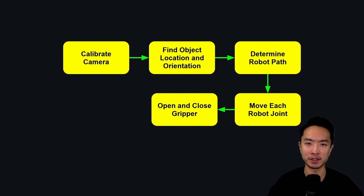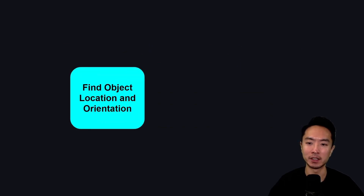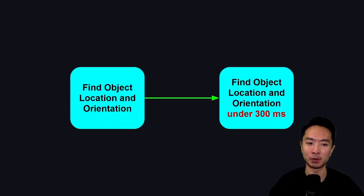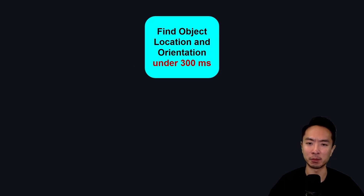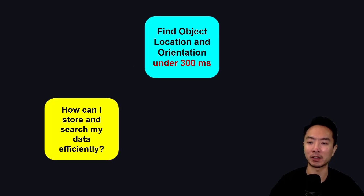So let's say we're focusing in on this part — the find object location and orientation. Let's say that now we want to do it in under 300 milliseconds.